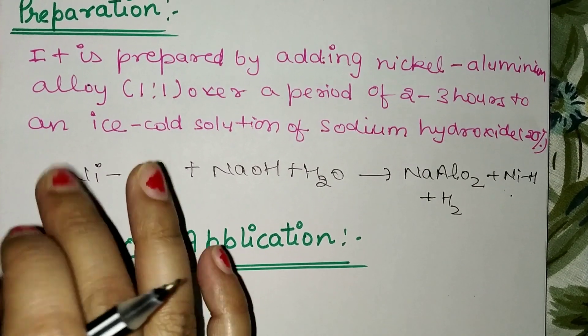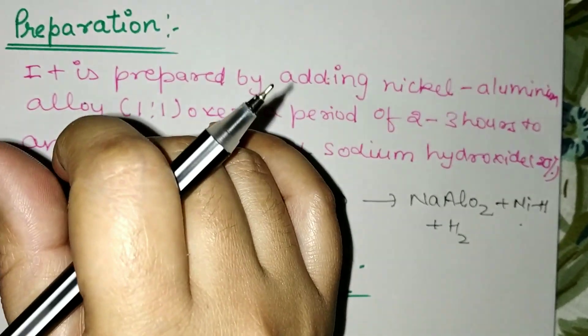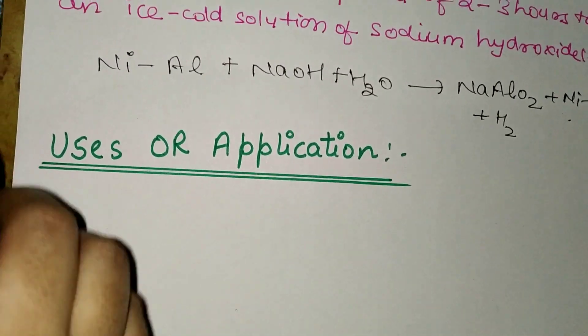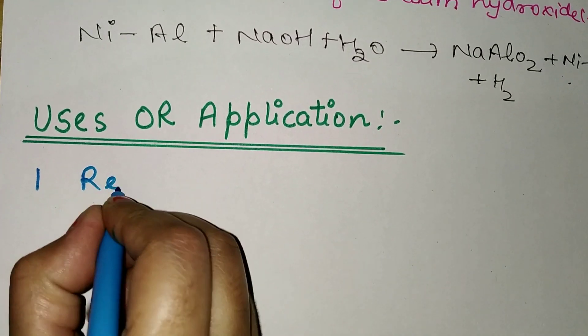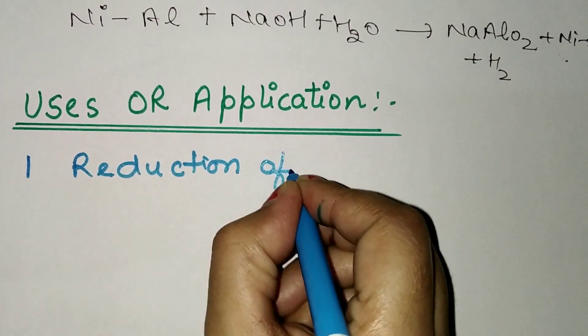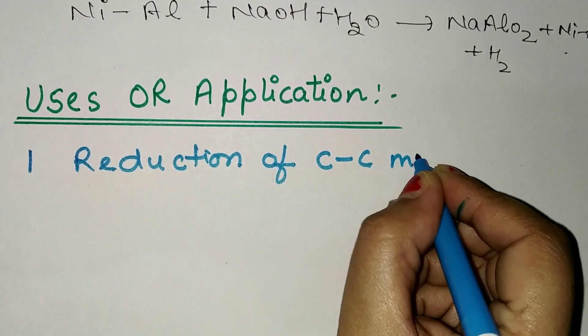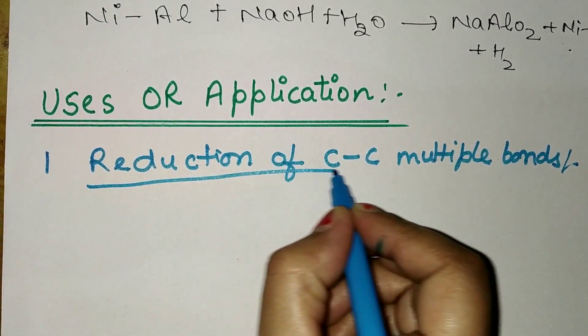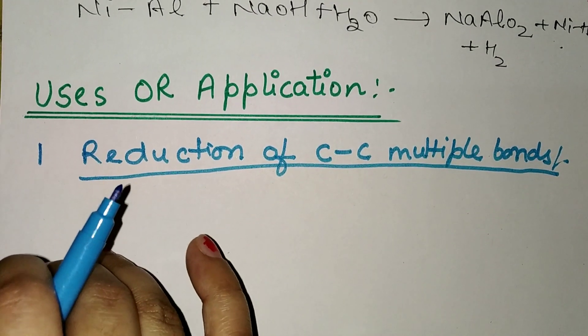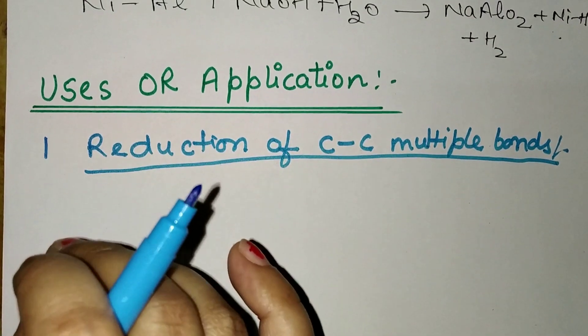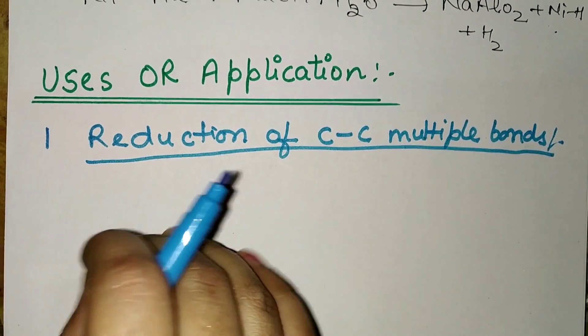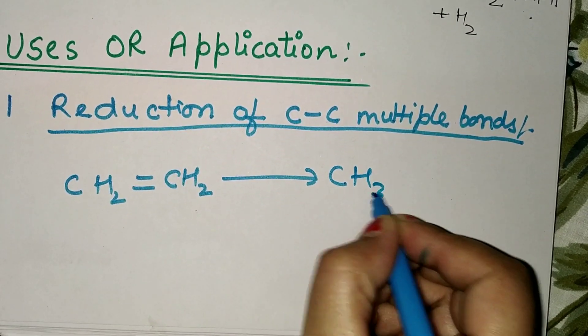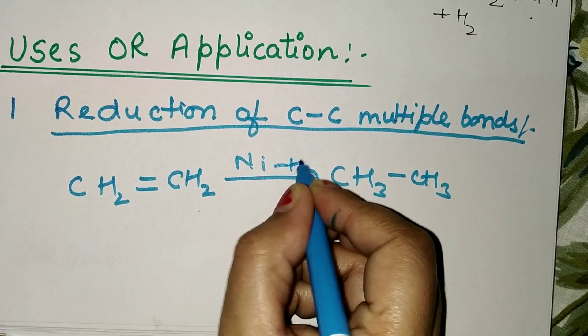Next, uses or applications of Raney nickel. First is reduction of carbon-carbon multiple bonds. Raney nickel reduces multiple bonds present in aliphatic, aromatic, and alicyclic compounds. For example, ethyne changes into ethane in the presence of Raney nickel at room temperature.